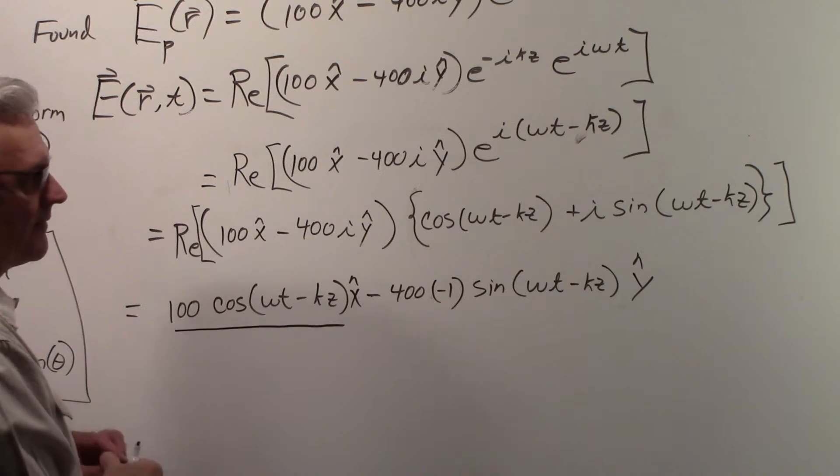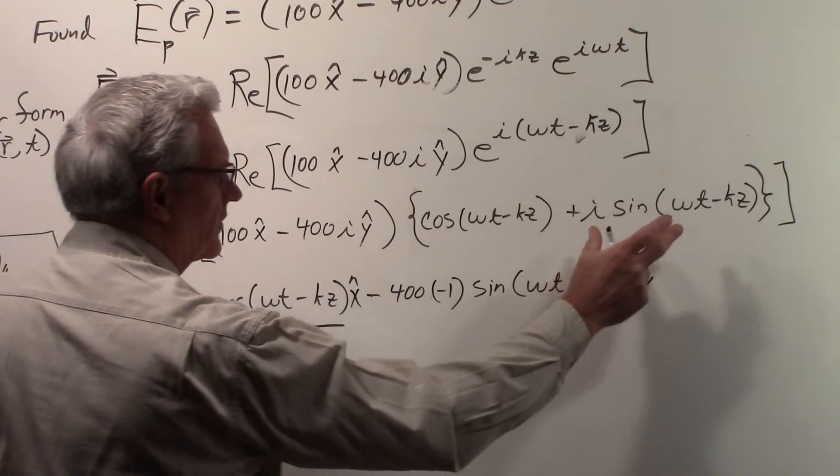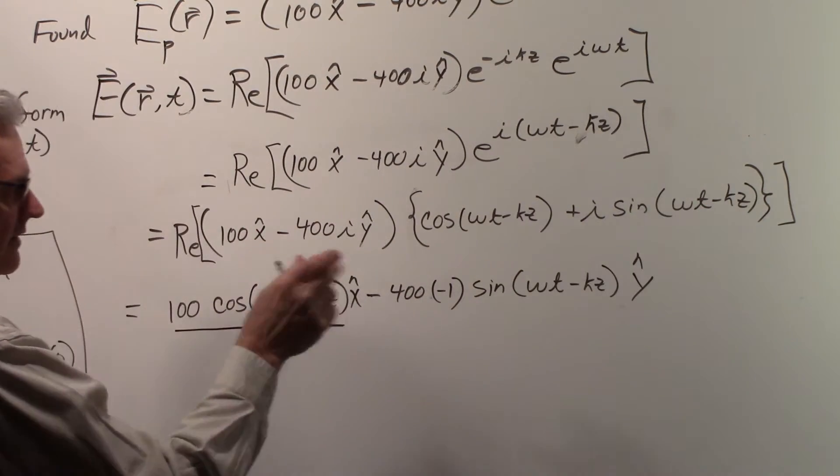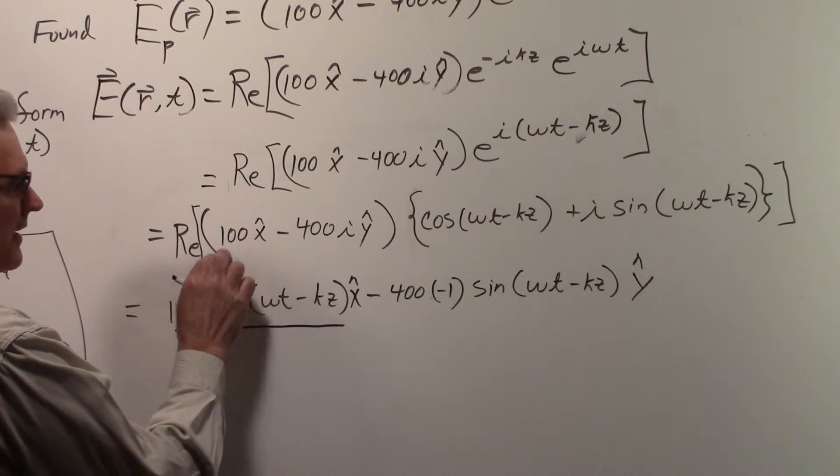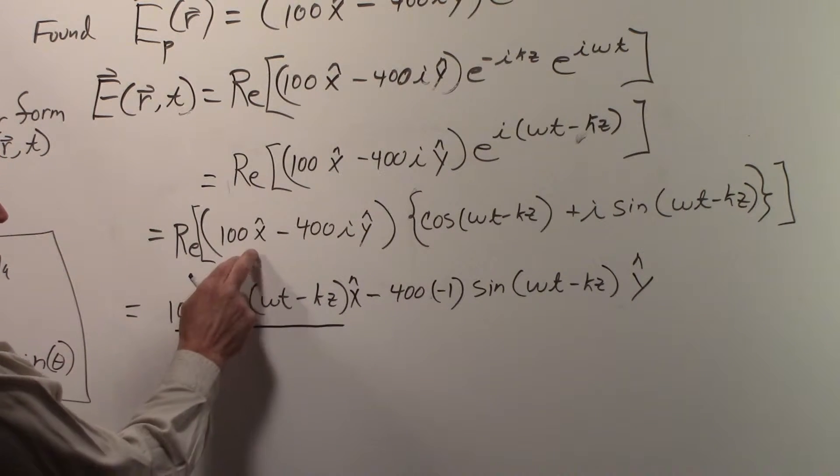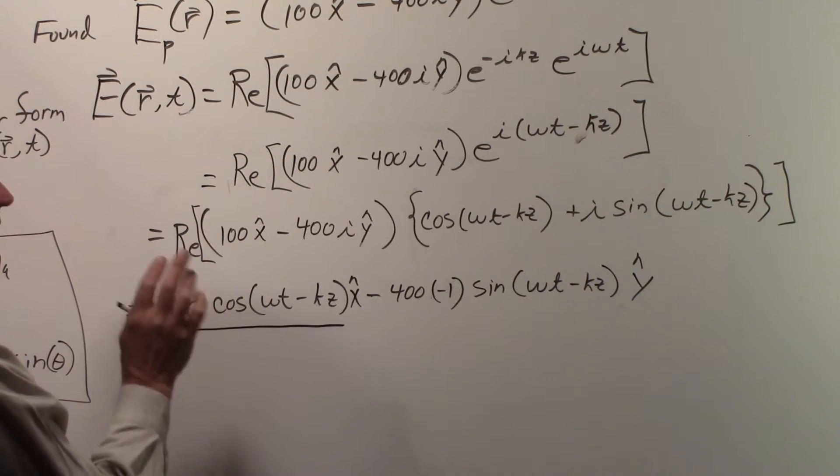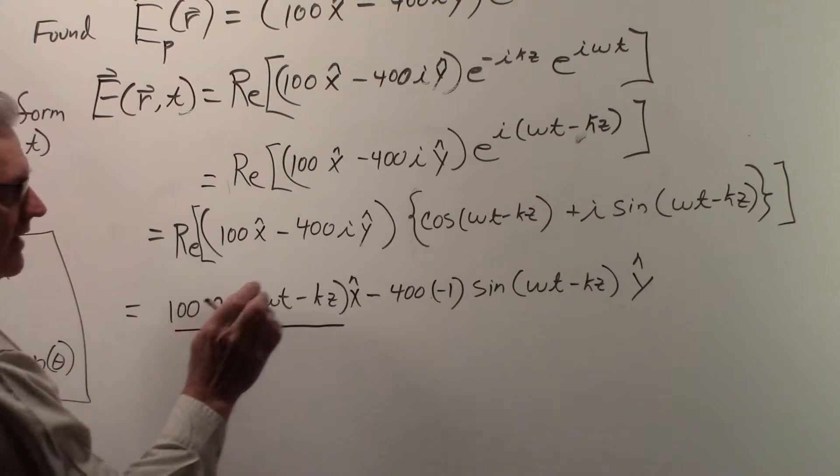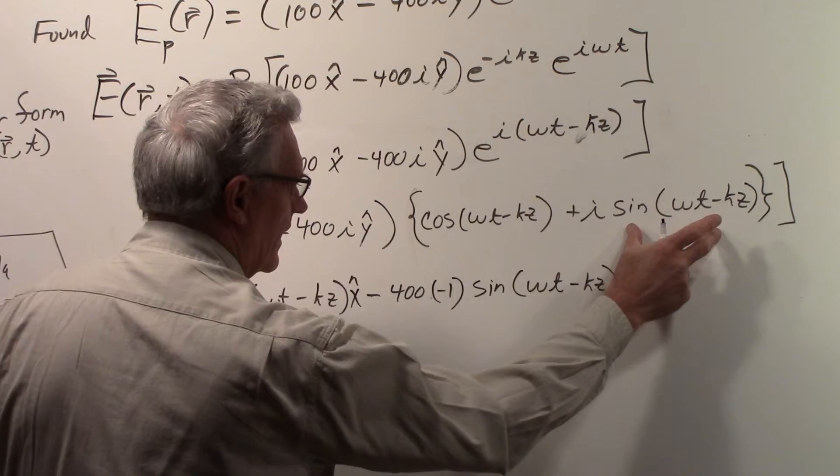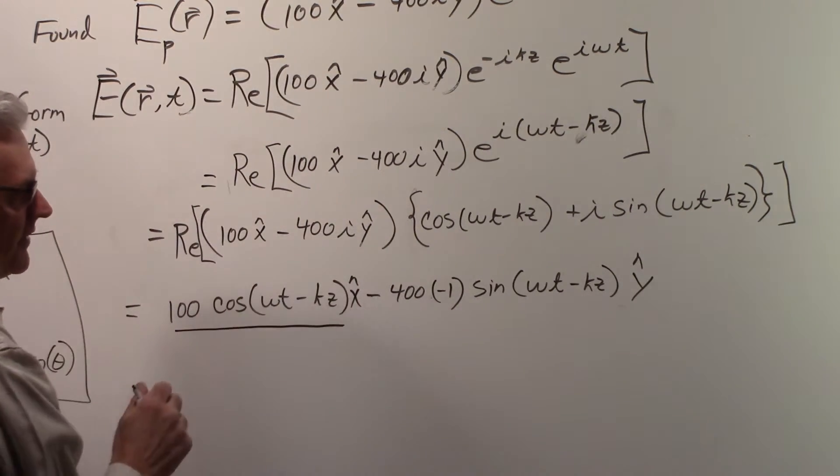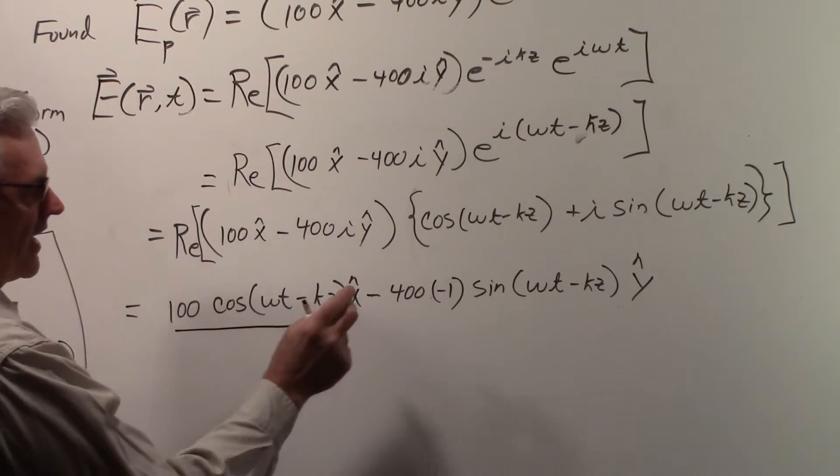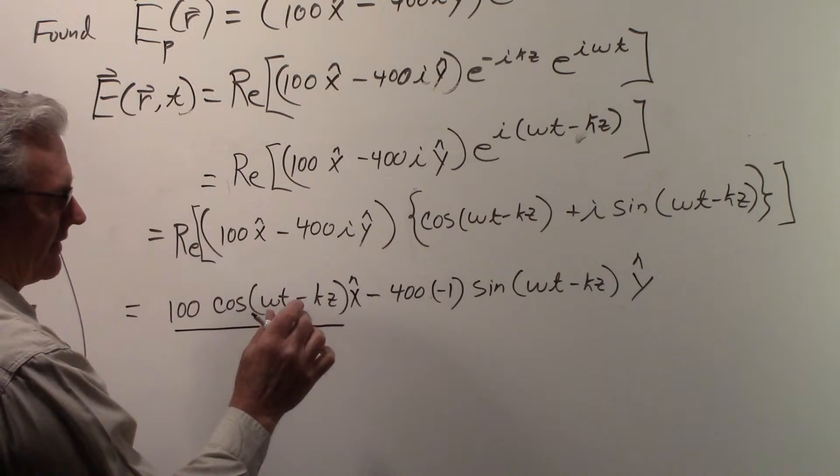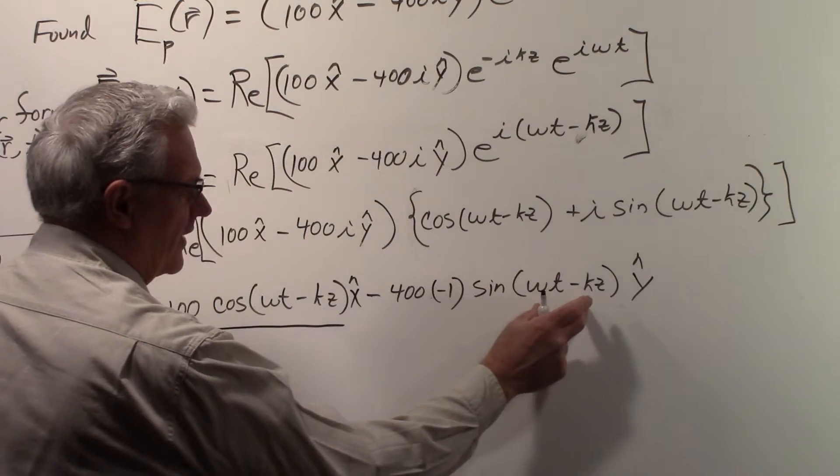Now when we multiply with the next term here—the i·sin(ωt - kz) times the x component—we're going to have an i, so when we take the real part of that it goes away. Now we look at multiplying this term times the y component: the i times the i will give us a minus one, and we'll have the sin(ωt - kz)·y from doing that multiplication.